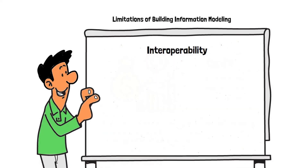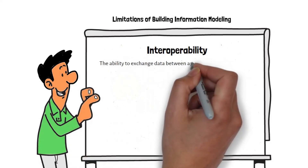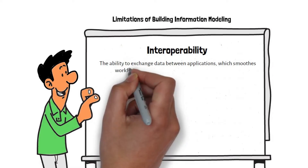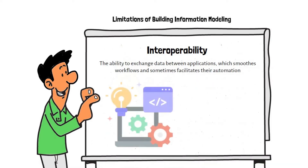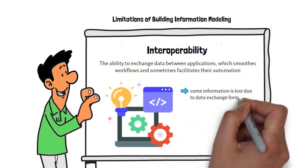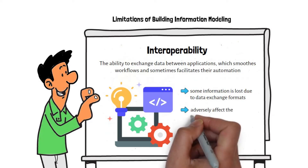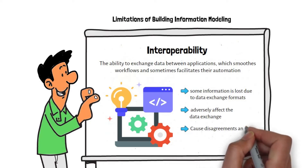Interoperability: Interoperability has been defined as the ability to exchange data between applications, which smooths workflows and sometimes facilitates their automation. Each project team uses different kinds of software due to specific needs and purposes. During the exchange of information, some data is lost due to data exchange format differences. This issue may adversely affect data exchange, and lack of interoperability and inaccuracies may cause disagreements and legal disputes.